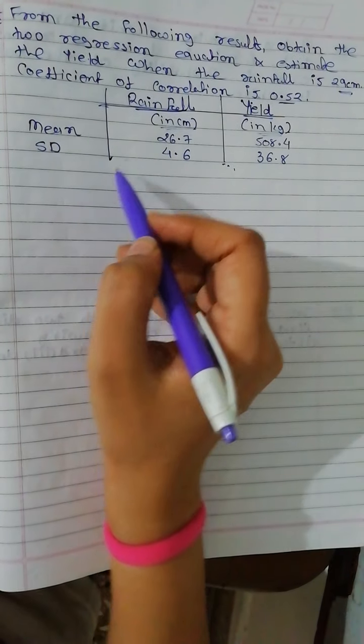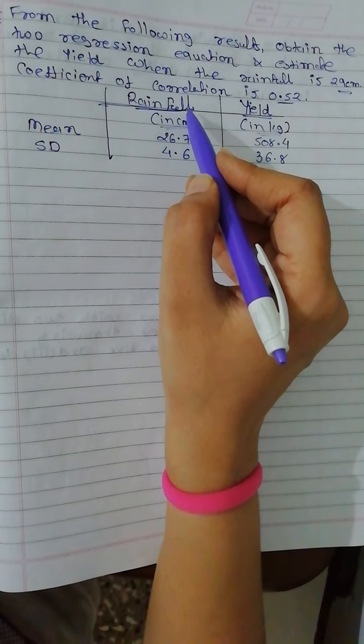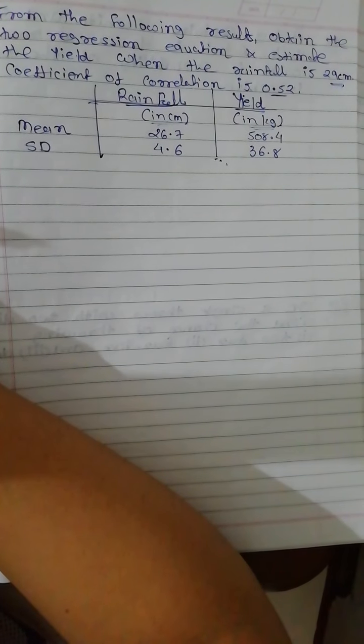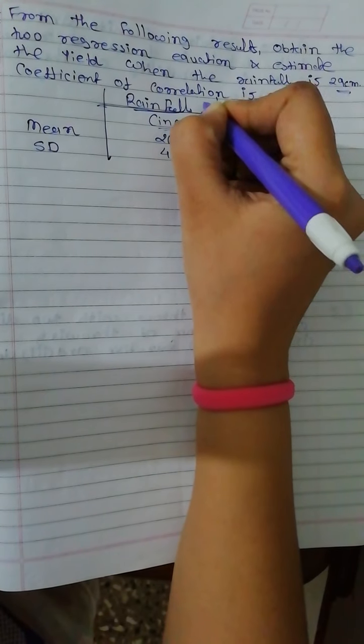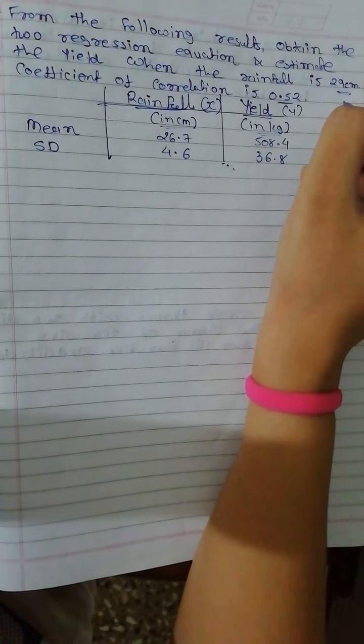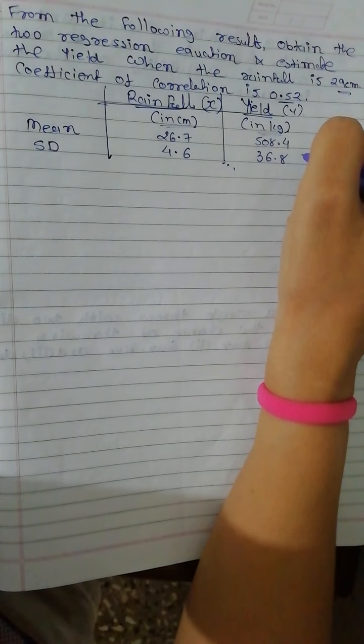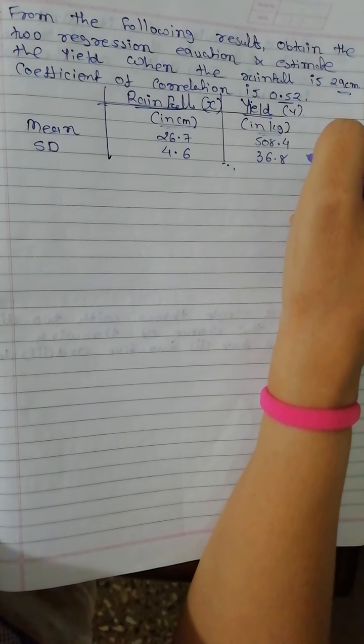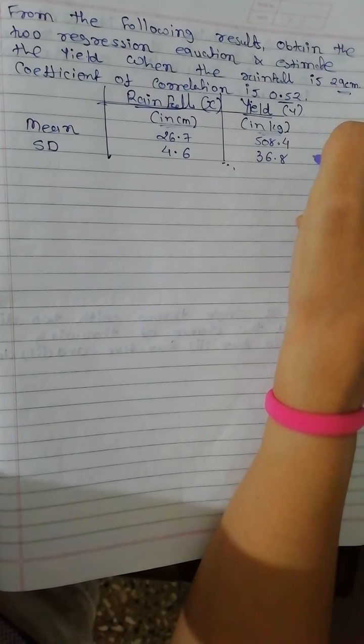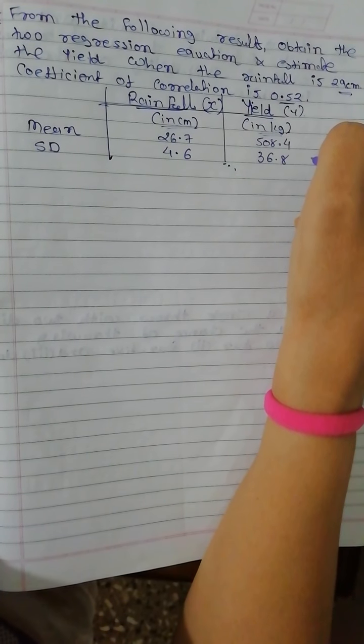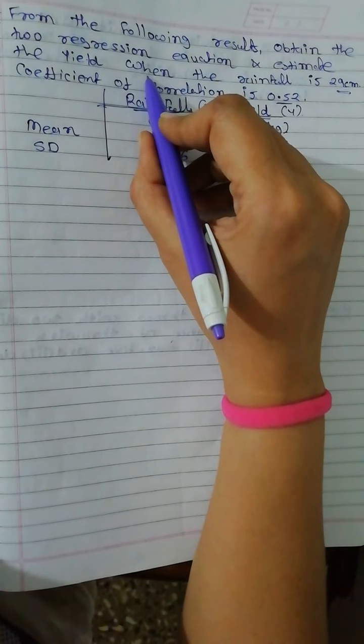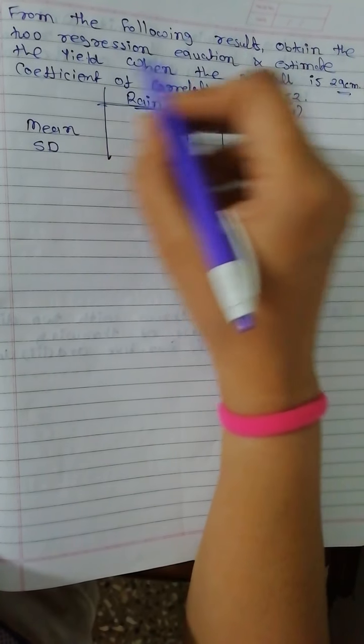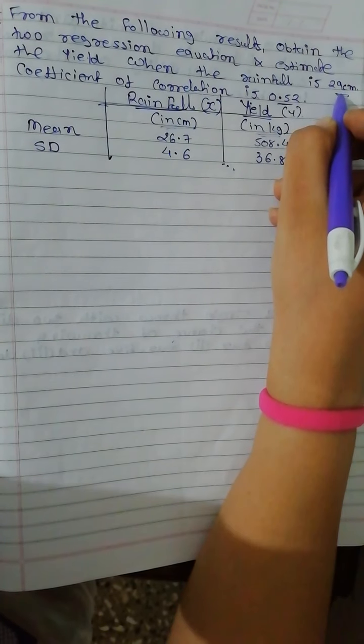Mean and SDs are given. We will consider x as rainfall and y as yield. In order to estimate the yield corresponding to a given amount of rainfall, we need a regression equation of y on x because it is given when rainfall is, I mean, estimate the yield when rainfall is 29 cm.